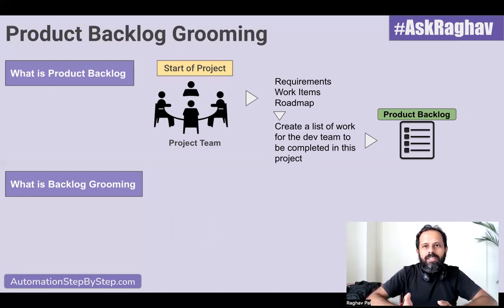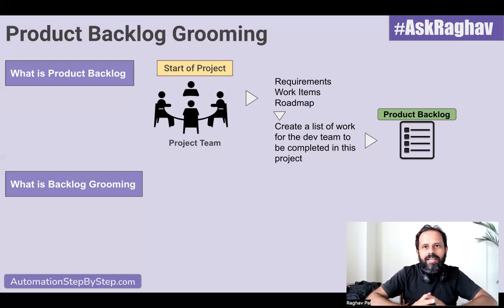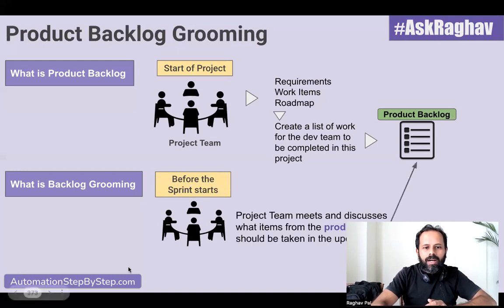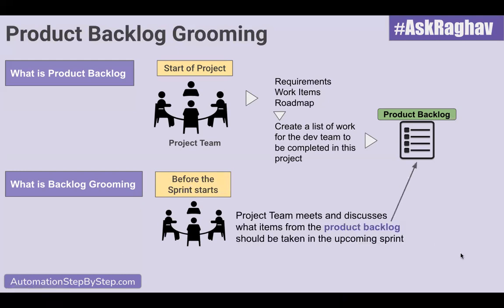The teams decide, out of the complete list of requirements, what things they can cover in this sprint, and then they take up those particular items from the list and work on it. So before the sprint starts, the team meets and all the stakeholders meet, and then they take up the items from the product backlog that should be completed in this upcoming sprint. And this is called product backlog grooming or backlog grooming.